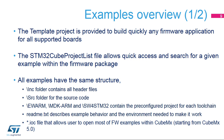The STM32Cube project list file allows quick access and search for a given example within the firmware package. All examples have the same structure: the INC folder contains all header files, the SRC folder contains the source code, and the EWARM, MDK-ARM, and SW4STM32 folders contain the pre-configured project for each toolchain. A README text file describes the example behavior and the environment needed to make it work. Most examples also have a .ioc file enabling configuration of the firmware from the CubeMX tool.